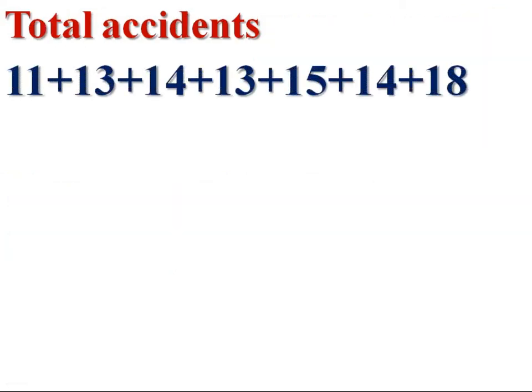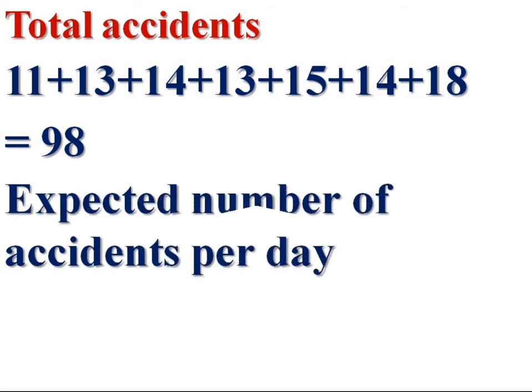The total accidents 11+13+14+13+15+14+18 = 98. The total accidents per week, 98. Then the average number of accidents, that is, expected number of accidents per day, 98 per week. Therefore, for a day, 98÷7 = 14. This 14 is the expected number of accidents per day, based upon the total accidents.